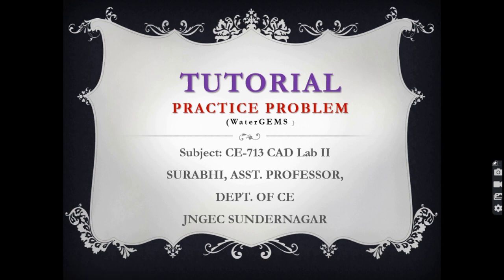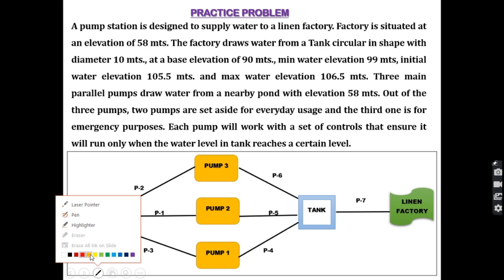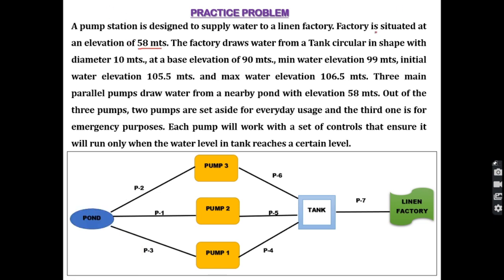Let's take a practice problem of a real life situation and use WaterGEMS to find the required results. Here we have a practice problem in which a pump station is designed to supply water to a linen factory. The factory is situated at an elevation of 58 meters.